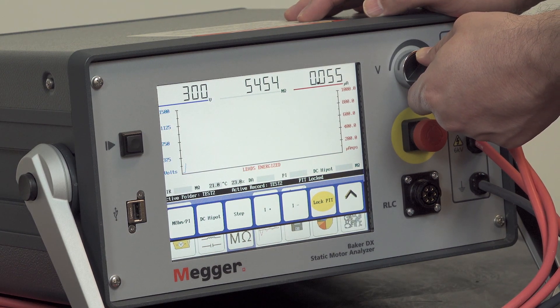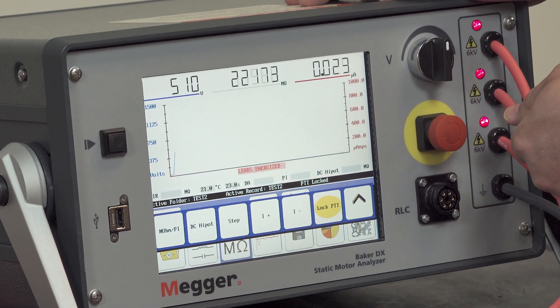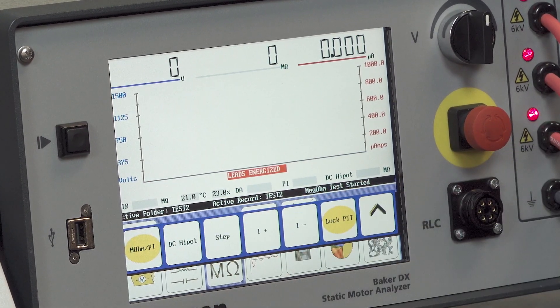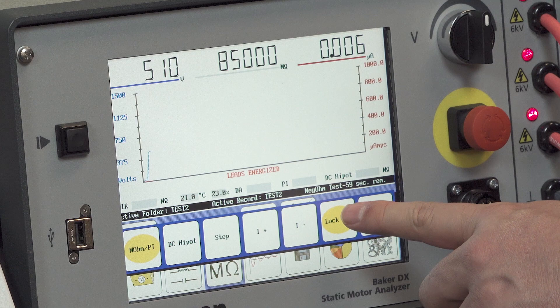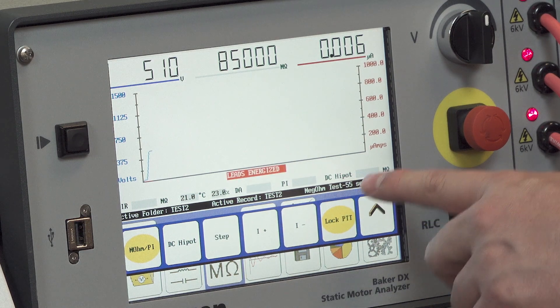At 500 volts, stop raising and then press the mega ohm PI button. That will initiate the test timer and you'll see it ticking down here on the right.